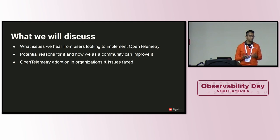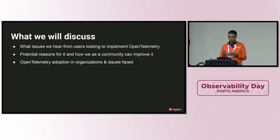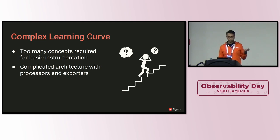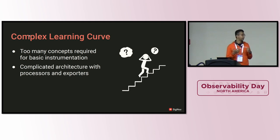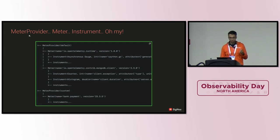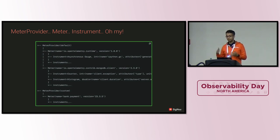One thing we face a lot is helping organizations implement OpenTelemetry, because implementing a new telemetry stack is an org policy and org transformation that takes a lot of buy-in. OpenTelemetry has a complex learning curve — even the basic concepts of instrumentation are essentially new. People don't know what an OpenTelemetry Collector is, what a processor or transformer is. Just to give an example, if you've ever done custom instrumentation of metrics, there are things like meter provider, then you have to define a meter, then there's an instrument — and it becomes very difficult for people to understand.